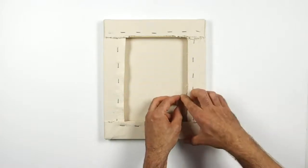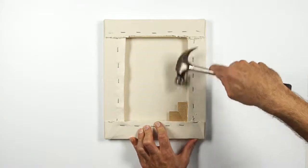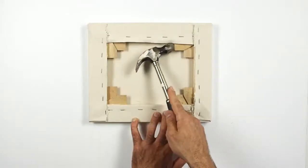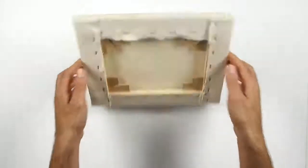Wedges force the stretcher bars wider, tightening the canvas further. It's worth rechecking that your canvas is still square at this point. Your canvas should now be as tight as a drum and ready for priming.